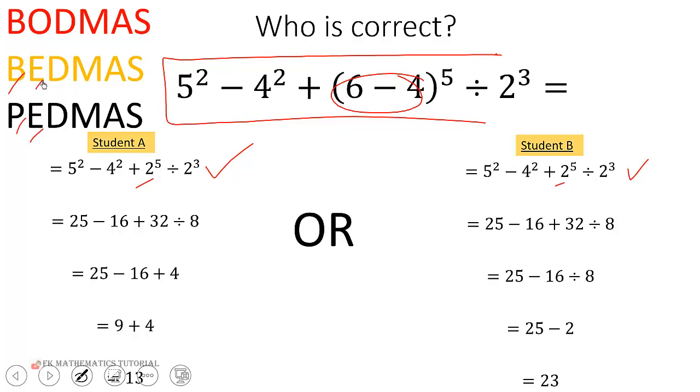Then the next thing you're supposed to do is to deal with any exponents. So they're able to do that and they have this. That is correct, that is correct.